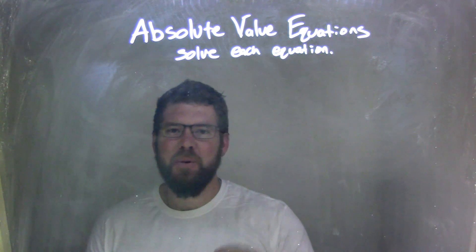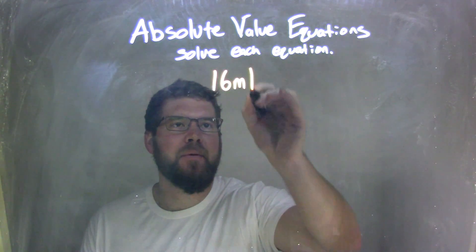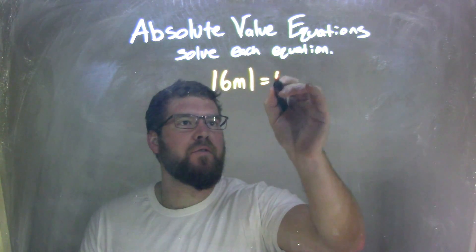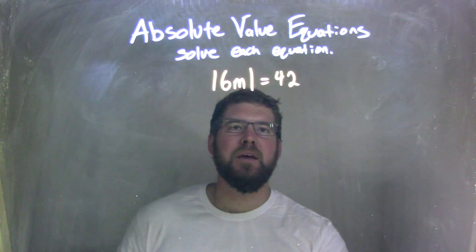So if I was given this equation, absolute value of 6m equals 42. Okay, so the absolute value of 6m equals 42.